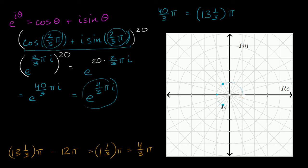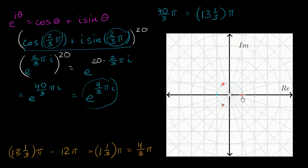Now, what if we wanted to raise it to the twenty-first power? Then we would increase the angle by another two-thirds pi, or eight pi over twelve, and we would go eight more segments to land right over there. This makes conceptual sense: the number to the first power was our original blue number. Raising to the second power increases the angle by two-thirds pi. Third power increases it again. By the fourth power you get back to the start, and continuing through the fifth, sixth... up through the twentieth power gets us right over there.